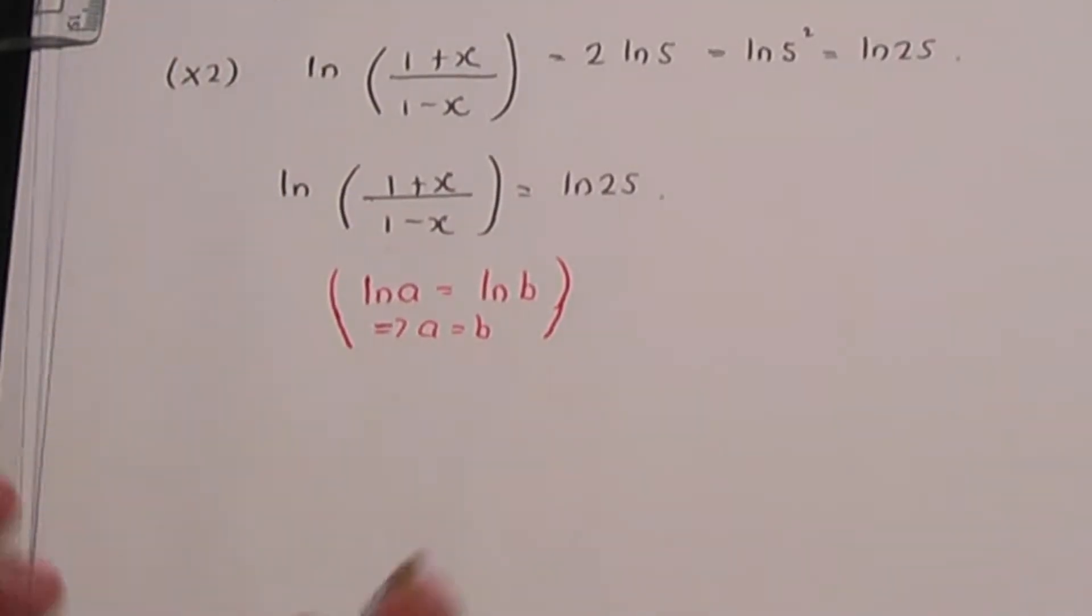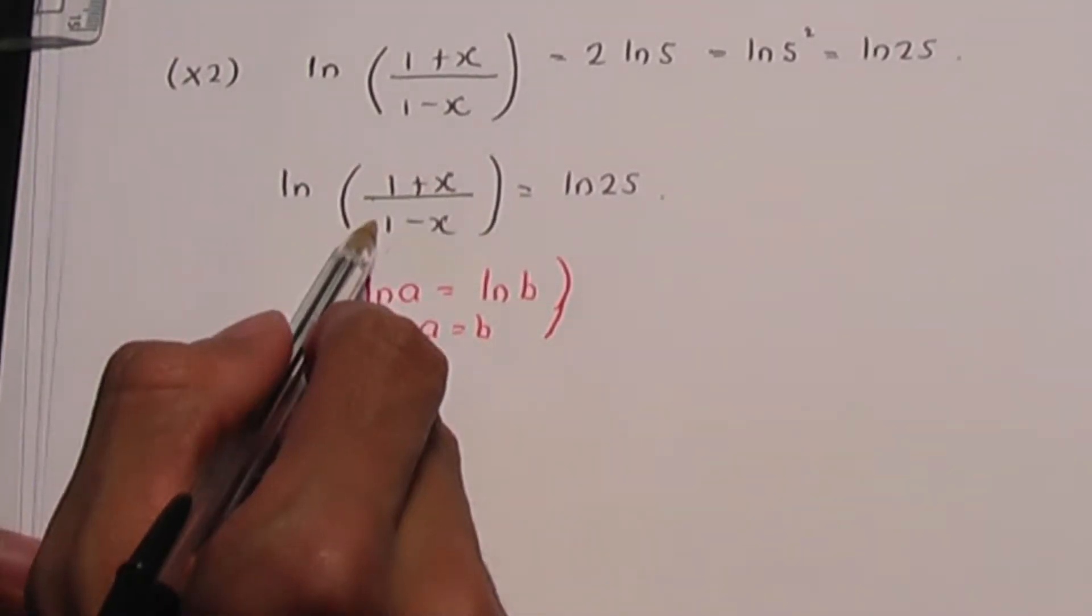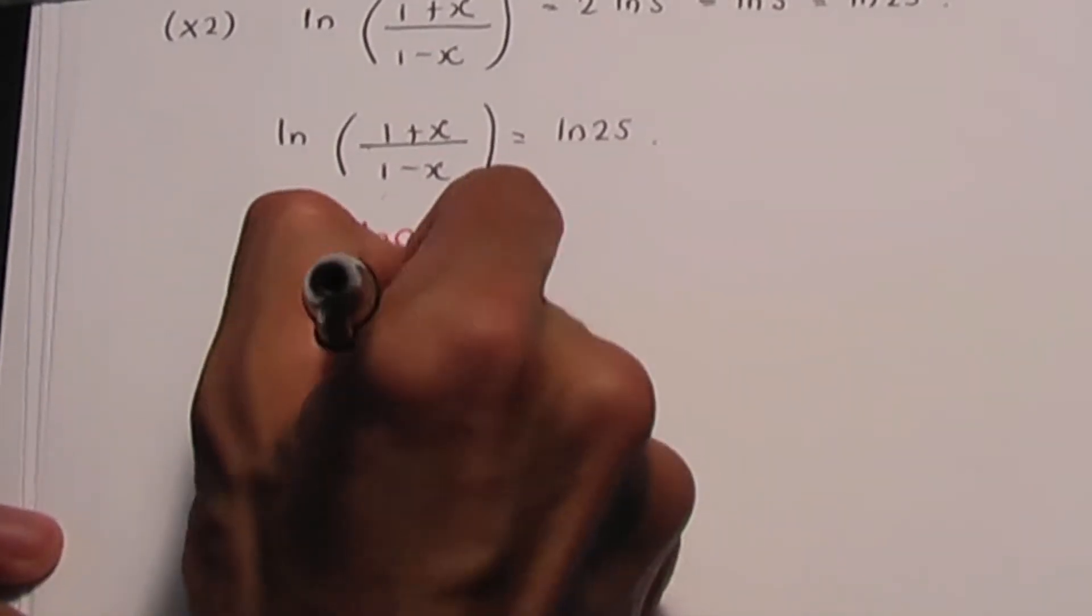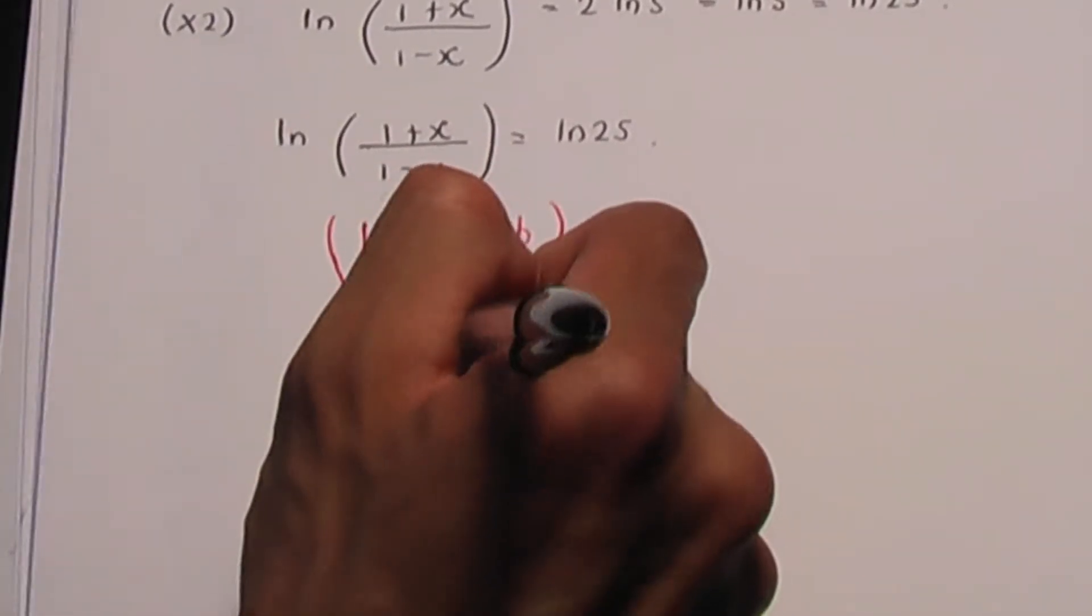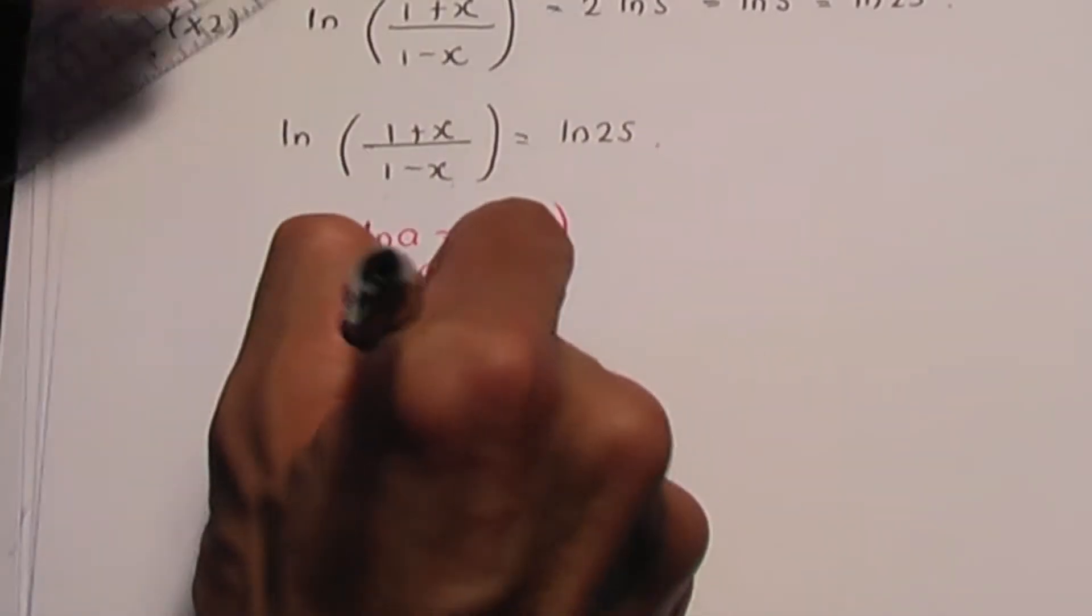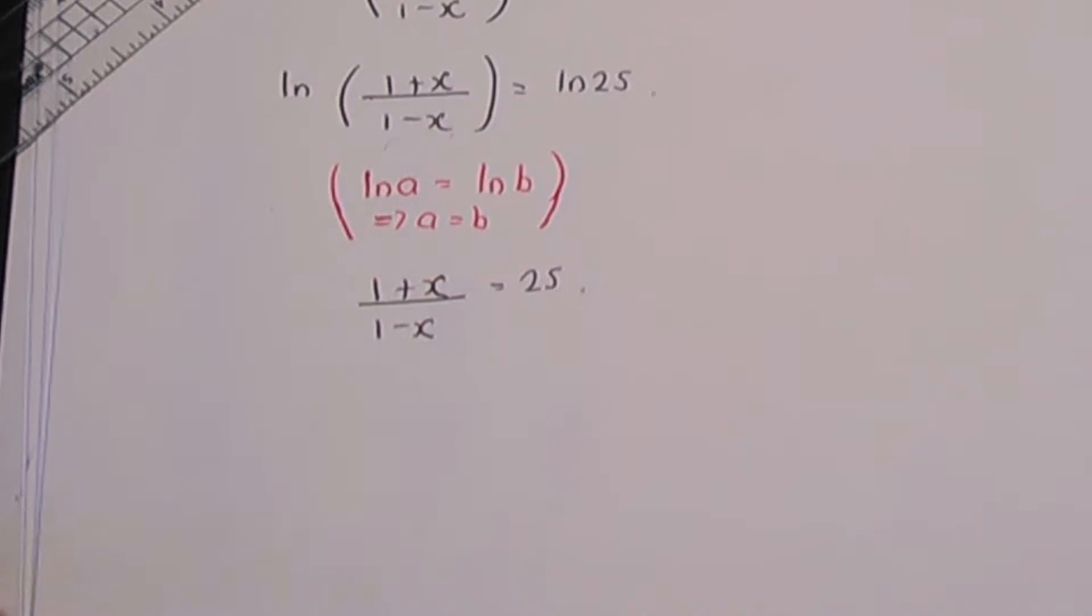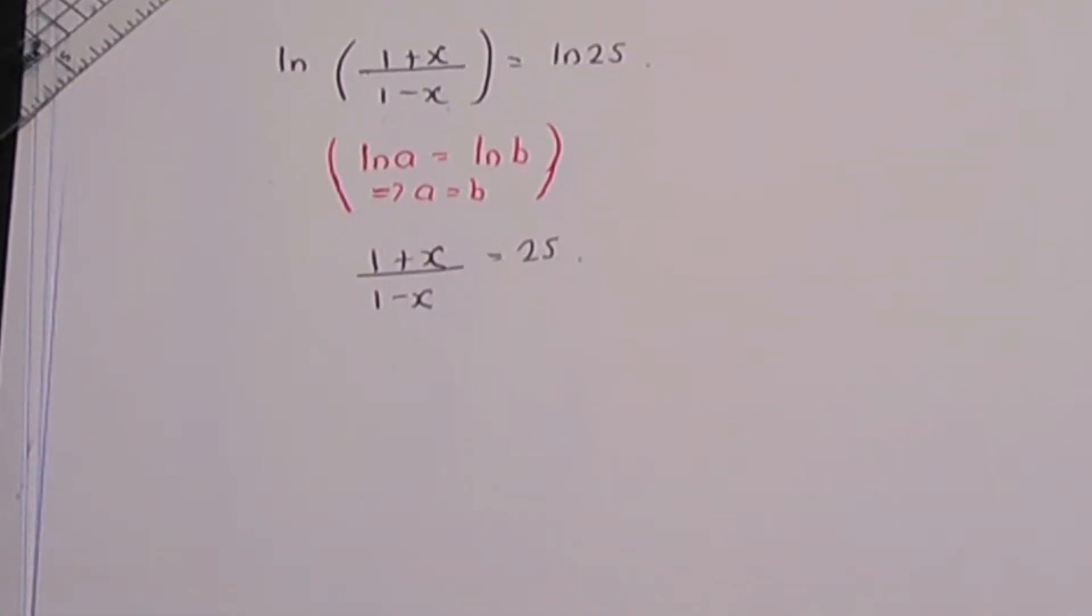So if I use this result here, ln of 1 plus x over 1 minus x equals ln 25, that would make 1 plus x over 1 minus x equal to 25. So now we have a simple equation to solve.